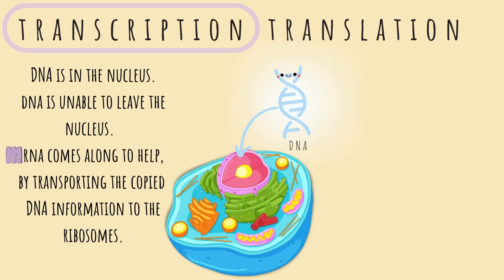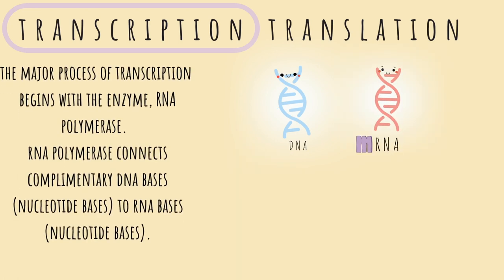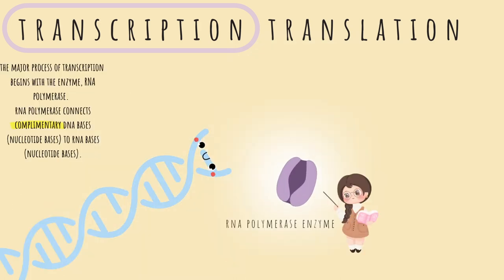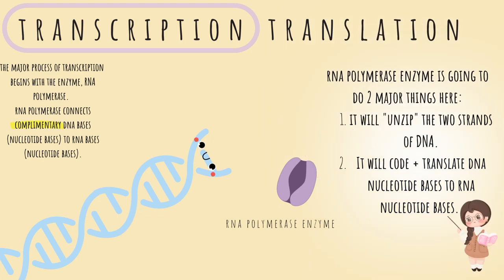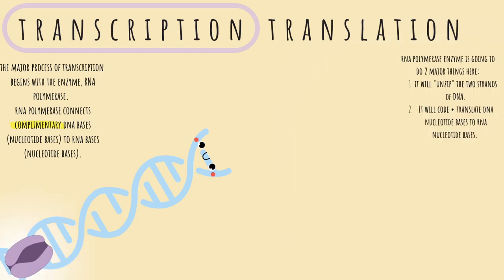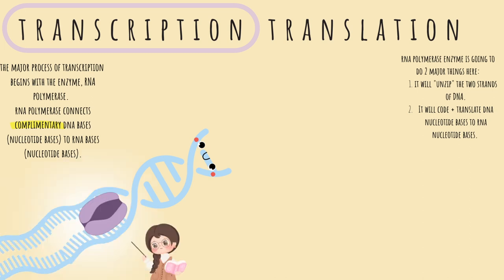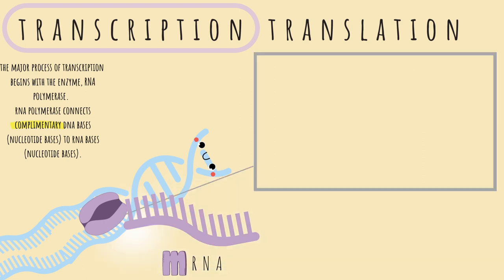Here is our DNA found in the nucleus, and here is our mRNA. The major process of transcription begins with the enzyme RNA polymerase. RNA polymerase connects complementary DNA bases to RNA bases. It will do two major things: one, it will unzip the two strands of DNA, and two, it will code and transfer DNA nucleotide bases to the appropriate RNA nucleotide bases. As it unzips, it is also creating the mRNA. The RNA polymerase only uses one strand of DNA to code — that strand is referred to as the template strand, also called the antisense strand.